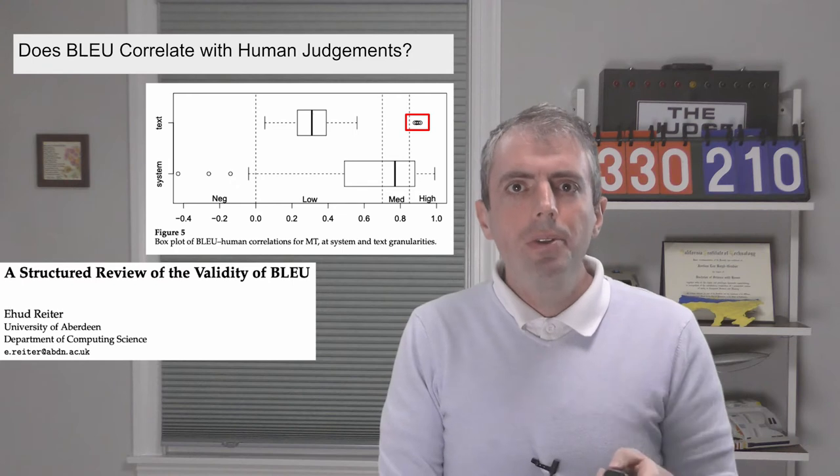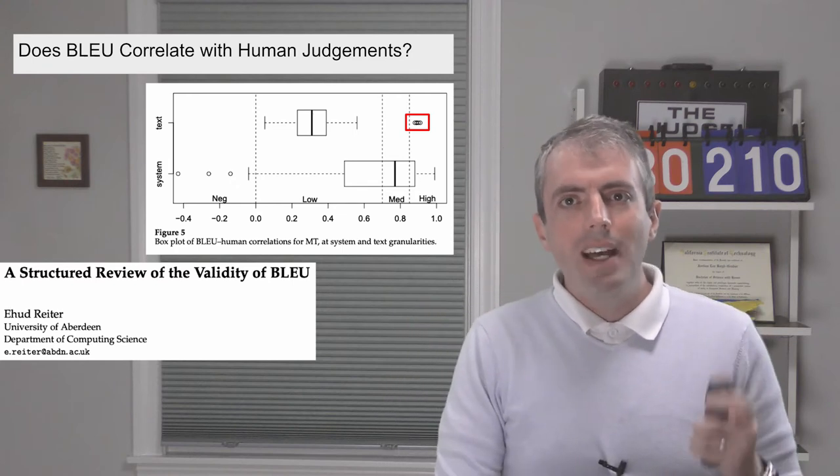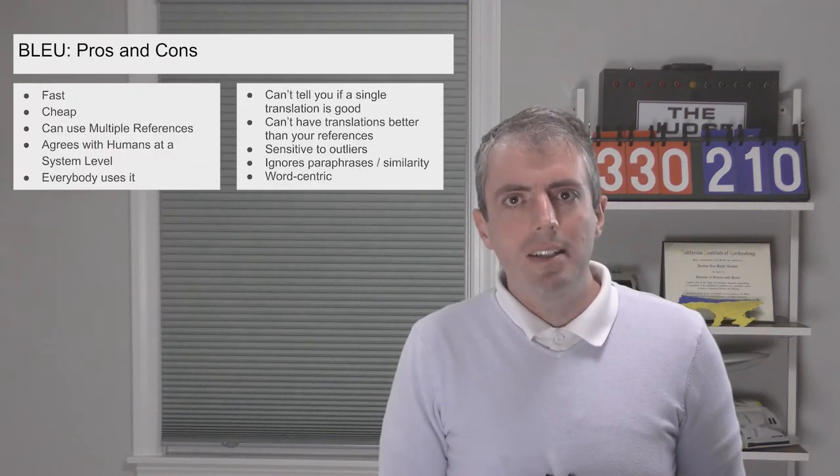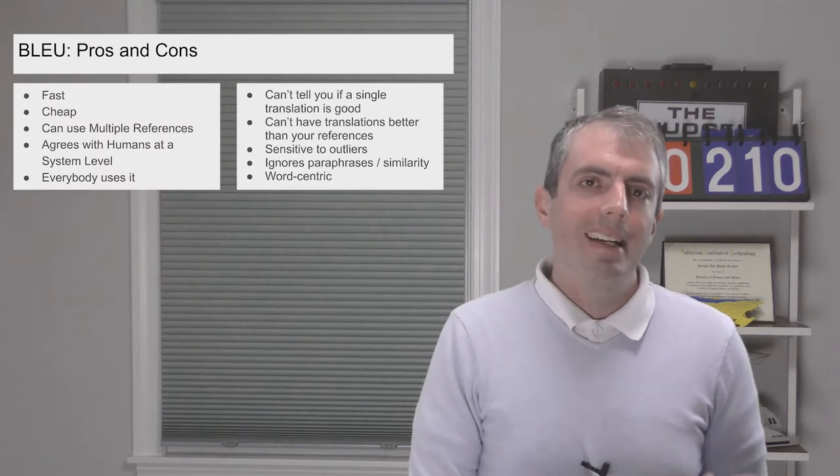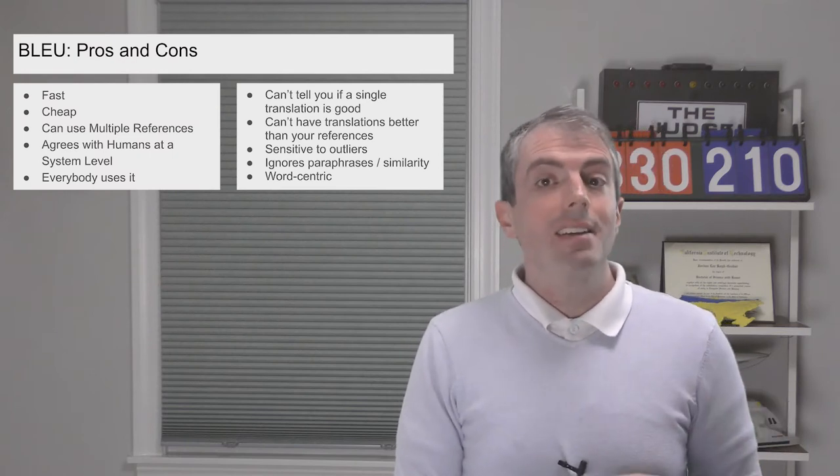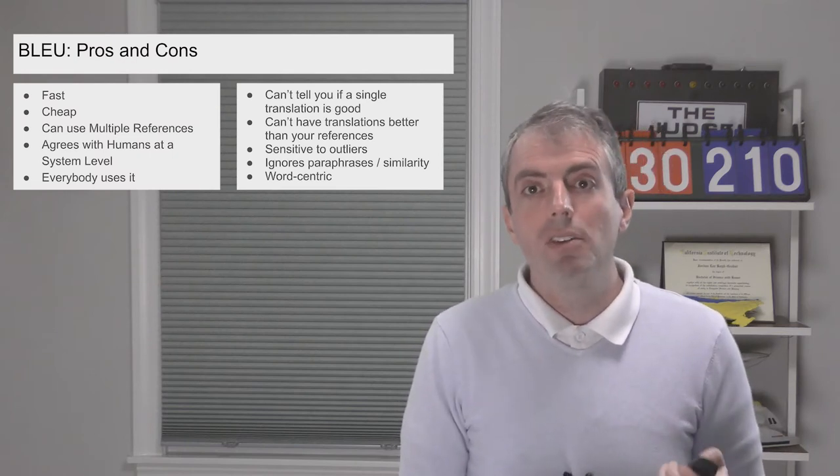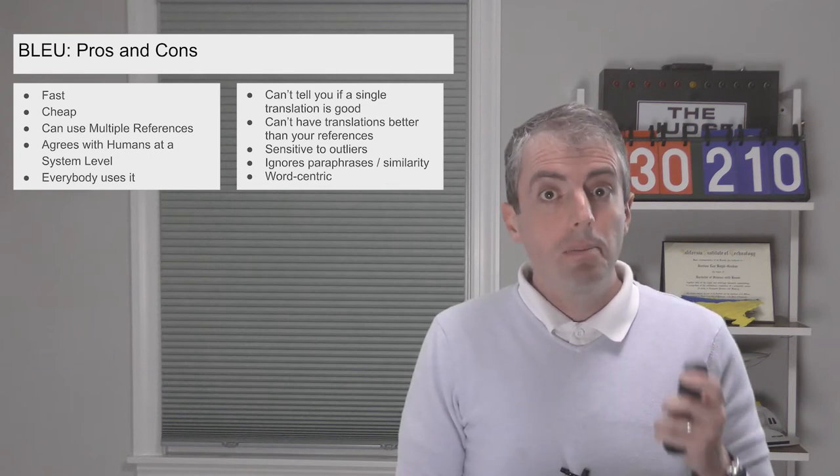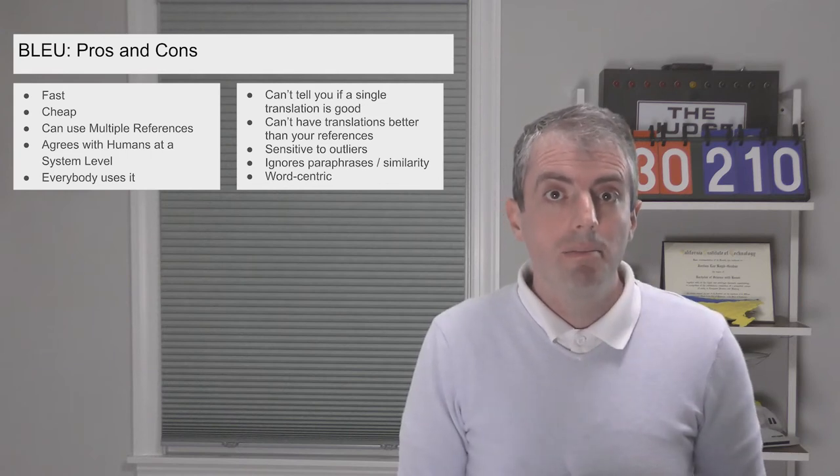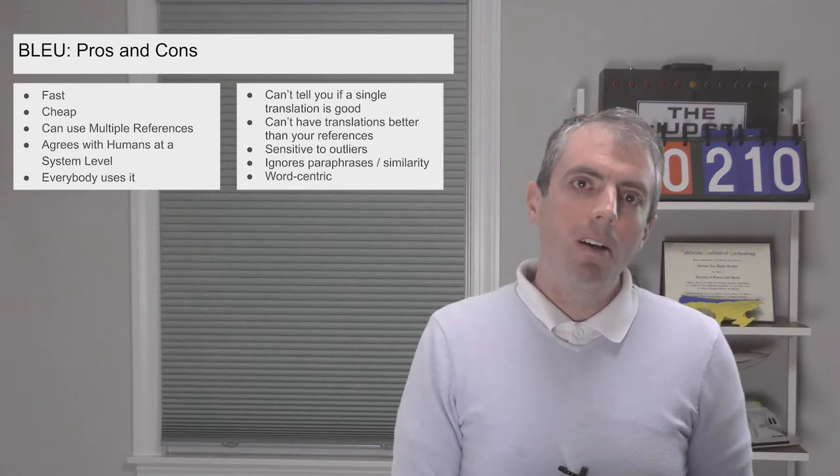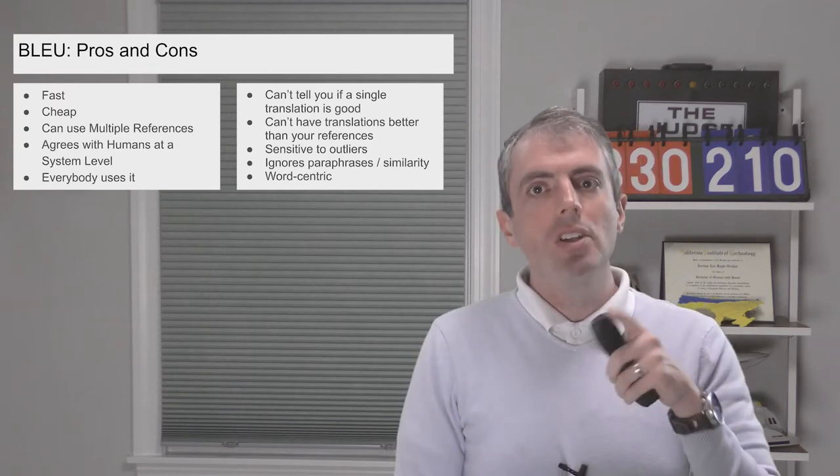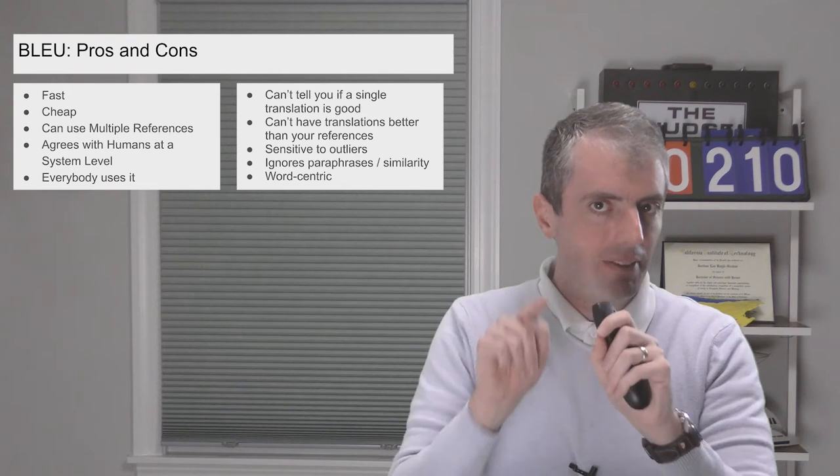So BLEU is the biggest evaluation metric for machine translation. What are the pros and cons? So clearly it's fast and cheap, and it works really well if you have multiple references, which is particularly important for modern machine translation systems. And it does seem to correlate relatively well with human judgments at the system level.